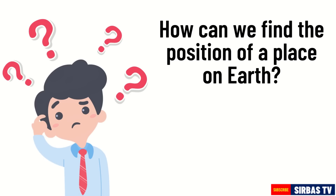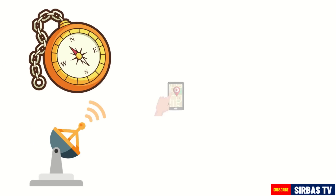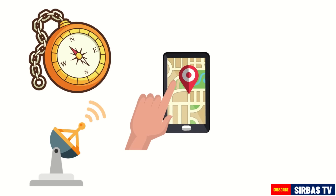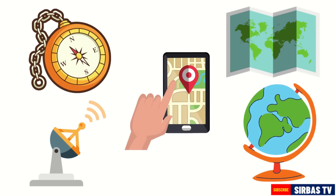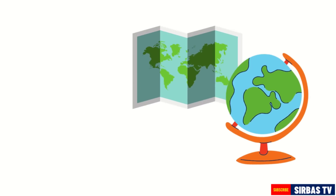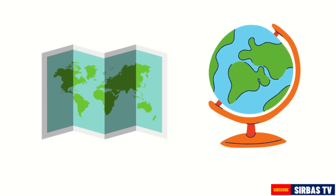Can you please give examples? Correct! Some of these are compass, radar, GPS, maps, and globes. In this video, we are going to focus on maps and globes to find the position of a place.